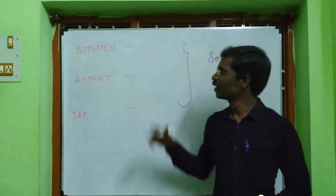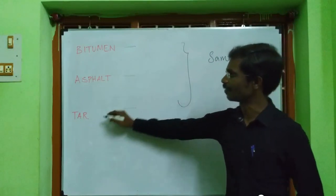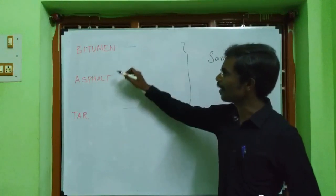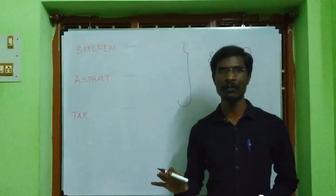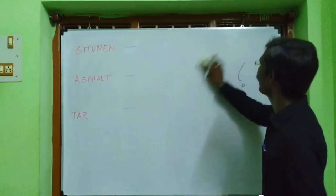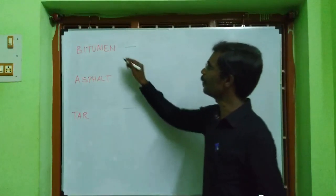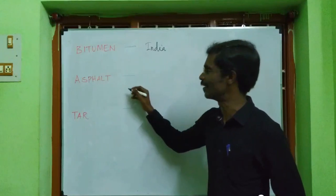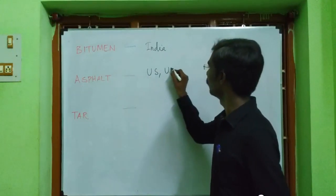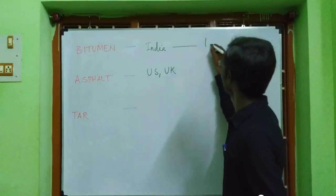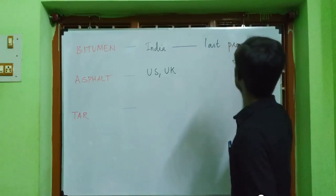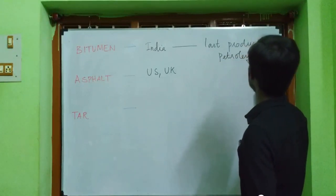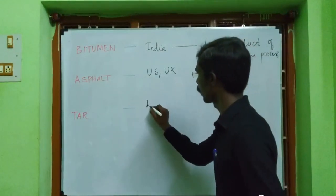Some terminology: bitumen, asphalt, and tar. Bitumen and asphalt are the same — bitumen is the name used in India, while asphalt is the term used in the US and UK. Bitumen is the last product of the petroleum refining process. Tar, on the other hand, is the last product of coal processing.